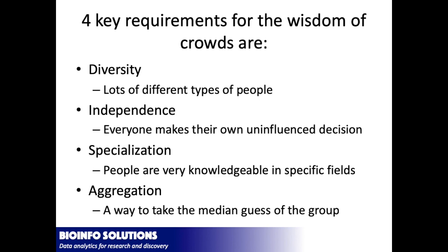There are requirements for the Wisdom of Crowds. Diversity — you have to have lots of different people making guesses. If you have the same people guessing, they'll just make the same kind of guesses. Independence — everybody makes their own uninfluenced decision. Specialization — people are very knowledgeable in certain fields, which also adds to diversity. But the key for biology is the aggregation: how do we take all these people with different opinions and different guesses and take the average of that? How do we use all this information?